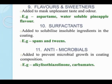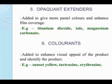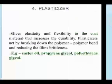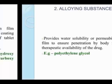The last one is antimicrobials. These are added to prevent microbial growth in the coating composition. Examples are alkyl isothiazolinone and carbamides. So these are the materials used in film coating. Thank you. Have a nice day.